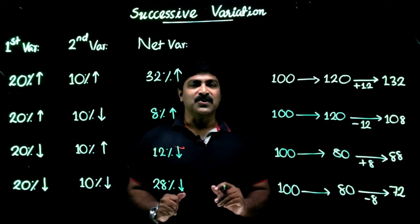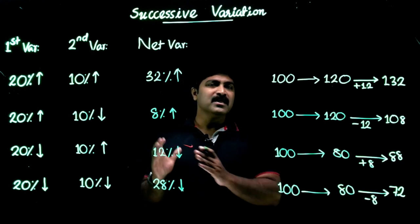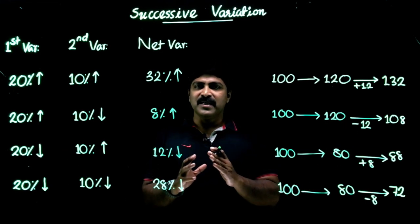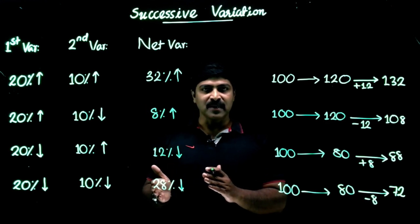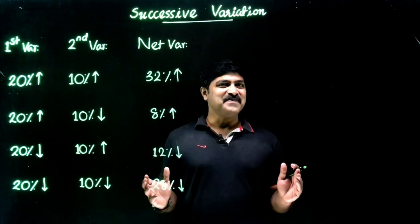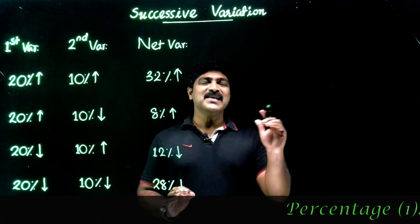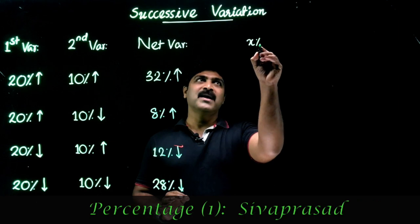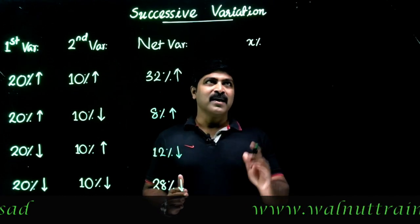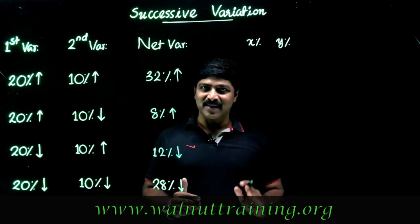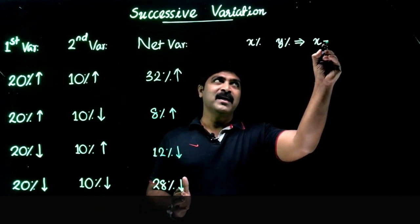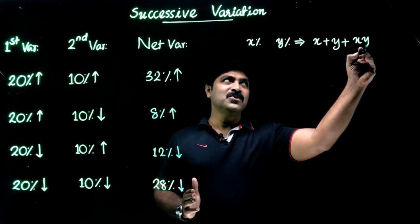This is the basic idea of successive variation. You will get lots of questions related to this basic application. But in addition to these basic assumptions, you have to be familiar with the trickiest and quickest way to reach the net variation conclusion. I will explain that interesting trick. The trick is very simple: if a quantity first varies by x percent — the term variation means it may either increase or decrease — and successively varies by another y percent, then the net variation is simply x + y + (x × y)/100.